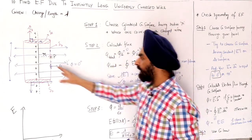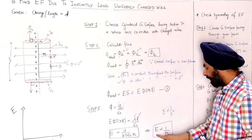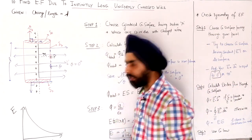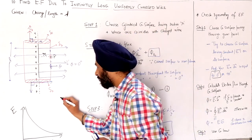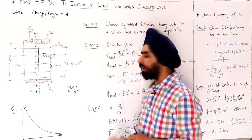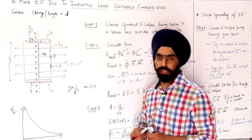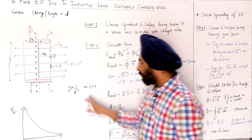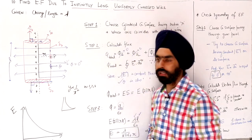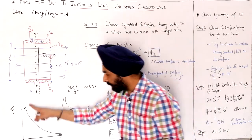Now we can plot the variation of E with distance r from the wire. Since E is inversely proportional to r, the graph is hyperbolic. For expressions of the form y ∝ 1/xⁿ, where n can be 1, 2, 3, or even 1.1, 1.2, etc., the graph has this characteristic hyperbolic shape. Here n = 1, so we get this hyperbolic graph of E versus r.